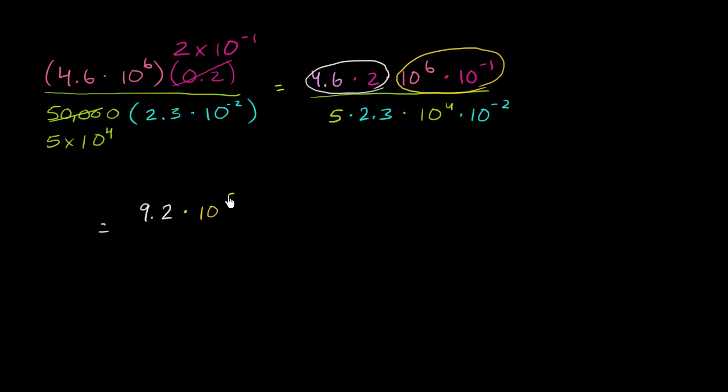So we've simplified our numerator. And now in our denominator, 5 times 2.3 - 5 times 2 is 10, 5 times 0.3 is 1.5, so it's going to be 11.5. And then if I multiply 10 to the fourth times 10 to the negative 2, that's going to be 10 to the 4 minus 2, or 10 squared.